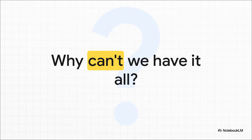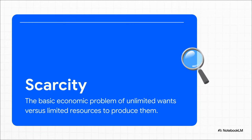It's the ultimate question. We have endless wants — big dreams and all these desires — but we live in a world that has limits. Limited time, limited money, limited resources. So why can't we just have everything we want? Well, the answer has a name: scarcity. It's this simple but really powerful idea that what we want will always, always outstrip what we have.